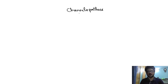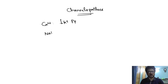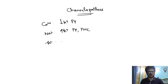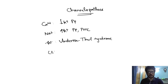There are a lot of channelopathies but the important ones are: calcium channel involvement — hypokalemic periodic paralysis; sodium channel involvement — hyperkalemic periodic paralysis as well as paramyotonia congenita; potassium channel involvement — Andersen-Tawil syndrome; and chloride channel involvement — myotonia congenita.